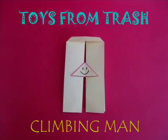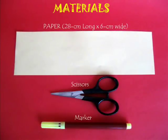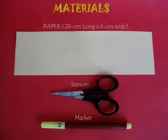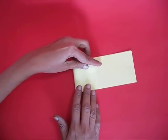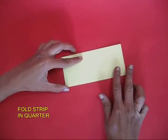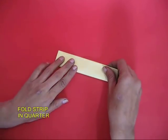The climbing man is one of the most delightful paper toys. You need a long strip of paper 28 cm long and 6 cm wide. Fold this long strip first into a half and then into a quarter.